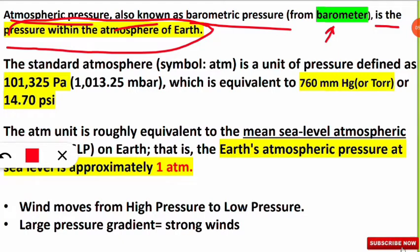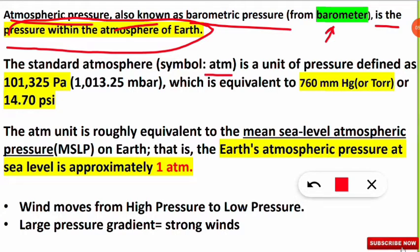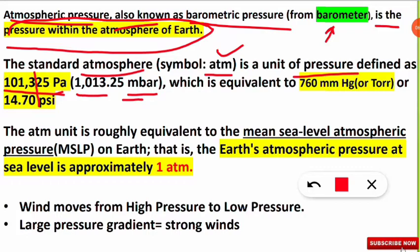The standard atmospheric pressure is denoted as ATM — a unit of pressure. One ATM is equal to 101,325 Pascal. Pascal is also a unit of atmospheric pressure, equivalent to 1013.25 millibar. The difference between Pascal and millibar is just a factor of 100 — dividing by 100 gives millibar. Bar is also a unit of pressure.